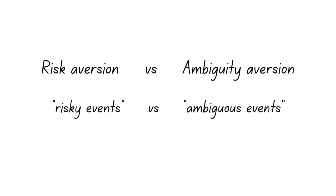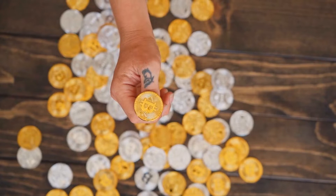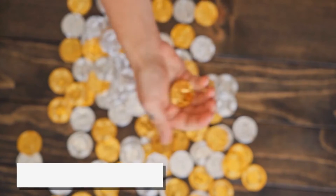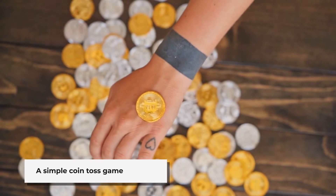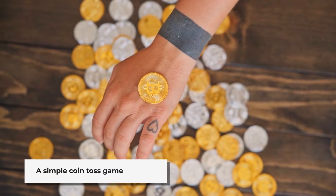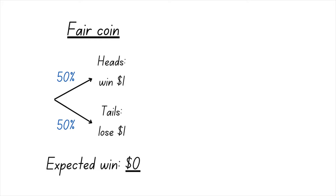Let's do that through a practical example. Imagine a simple coin toss game where you win a dollar if the coin lands on heads and lose a dollar if it lands on tails. If the coin is fair, you know that you'll win a dollar with a 50% probability and lose a dollar with the same probability. In this case, the probability distribution of outcomes is known, and you can quantify your expected return and risk. So this game qualifies as a risky event.